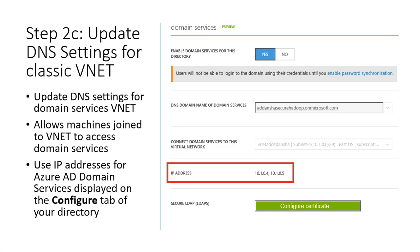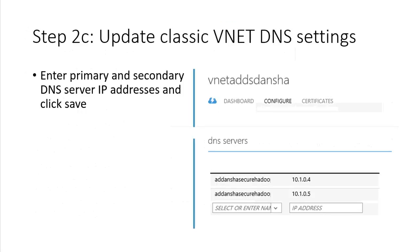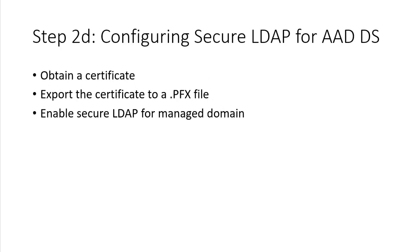After the VNet, we need to update the VNet with the DNS settings. Once extracted, you can see the DNS for Hadoop in the primary and secondary DNS server fields. Then we move on to the certificate.